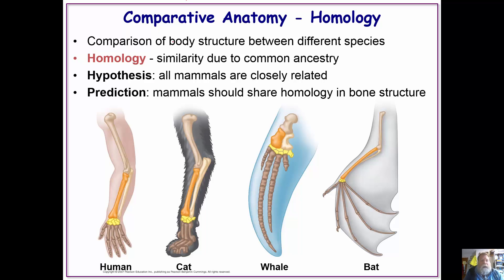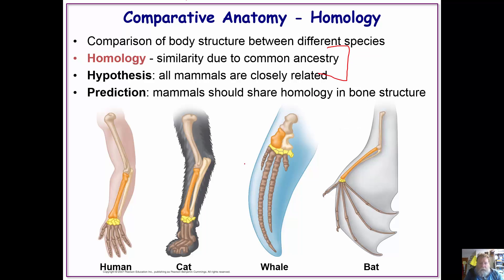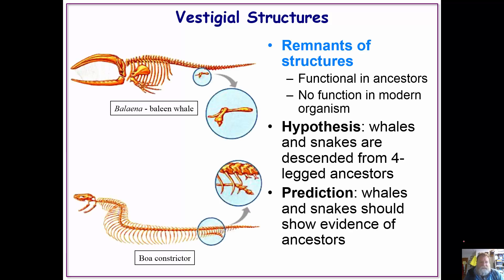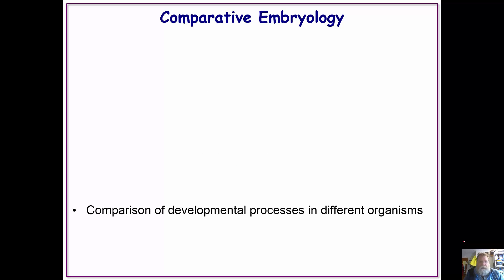When we look at comparative anatomy, homology is a similarity due to common ancestry. Organisms that share an ancestor are going to share limb structures. In these vertebrates, everything from humans to cats to whales to bats all have the same bone structure — because it all depends on that same ancestral material. I won't go into vestigial structures as well.